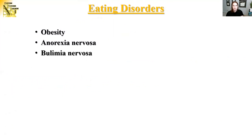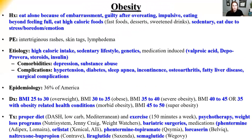Moving to eating disorders, starting with obesity — a huge problem, especially in America where a third of people are overweight or obese. Etiology includes high caloric intake, sedentary lifestyle, and genetics. A key board question: the most common medications implicated in weight gain are valproic acid (Depakote), Depo-Provera (birth control), steroid medications, and insulin. Complications of prolonged obesity include hypertension, diabetes, sleep apnea, incontinence, osteoarthritis, fatty liver disease, and surgical complications like wound dehiscence.